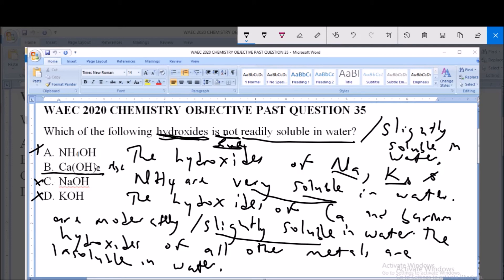So like we have rightly seen, option B, calcium hydroxide is slightly soluble in water and hence it is said to be not readily soluble in water. Thank you.